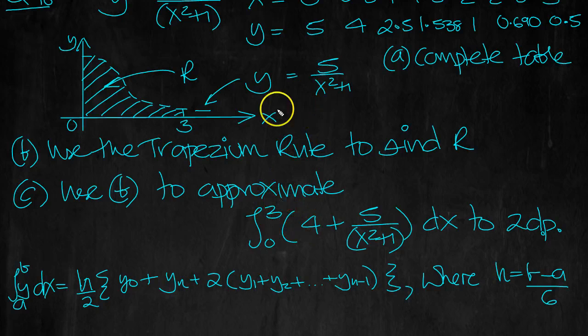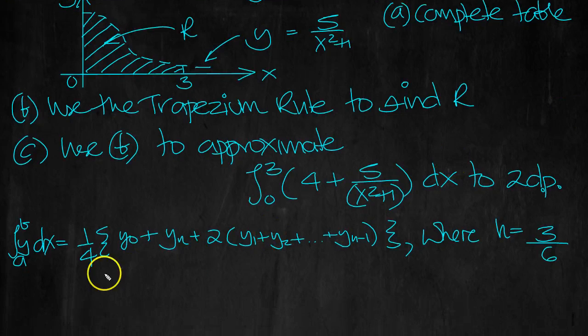We're evaluating the integral between 3 and 0 to find this region. So 3 minus 0 is 3. So 3 over 6 is a half, and H over 2, then a half over 2 is a quarter. So let's put that in. 1 quarter.